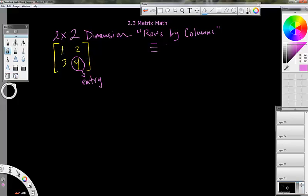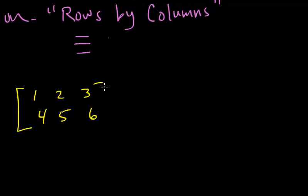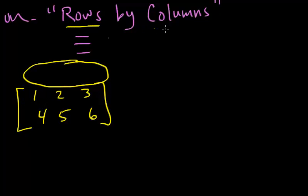We could look at different size dimensions. Like for instance we could have something like this: 1, 2, 3, 4, 5, 6. And I'm just filling in the entry spots with random numbers. But the dimension, if I said what is the dimension of that right there, it would be like saying how many rows and how many columns does it have. And that orders everything.